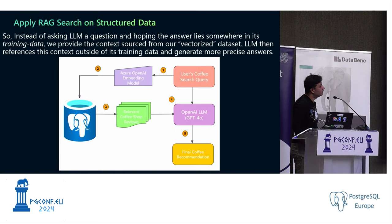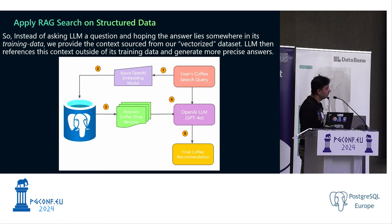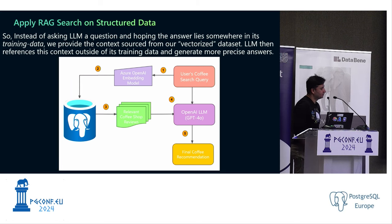At step number four, we are passing all the data to the OpenAI LLM, GPT-4.0. My question — I may sound stupid — but why do we need steps two and three? Can't we just pass the search query directly to OpenAI and do the RAG analysis?